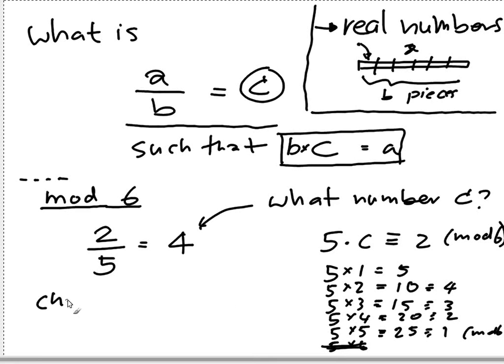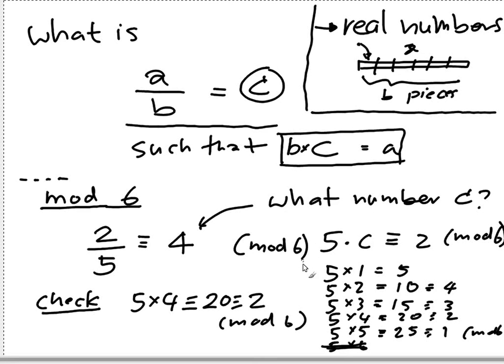We can check by, say, 5 times 4 is going to be 20, and that's 2 mod 6. So, we say, 2 divided by 5 is equal to 4 mod 6. This is how we're going to do the division. Let's look at another example.